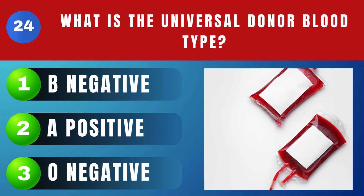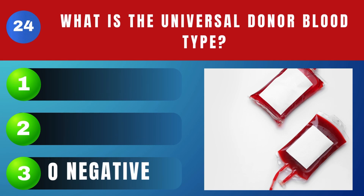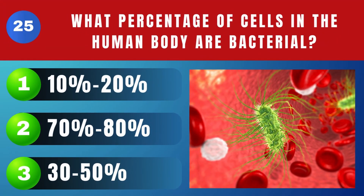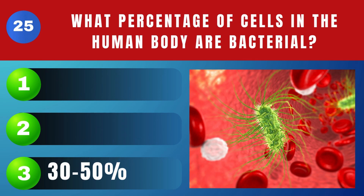What is the universal donor blood type? O negative. What percentage of cells in the human body are bacterial? Thirty to fifty percent.